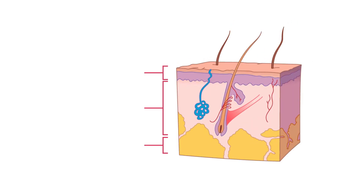The skin has three layers: the epidermis, dermis, and subcutaneous tissues, which include the hypodermis and subcutis.